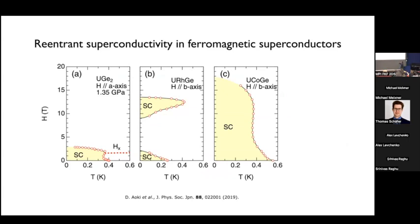You see this non-monotonic behavior as a function of magnetic field. Some are even more dramatic where you kill the superconductivity and it re-enters at a much higher field, as in this system, and also in uranium cobalt germanium.